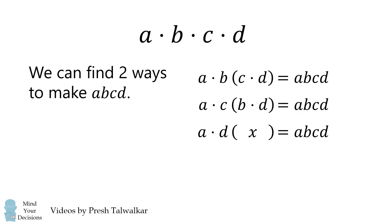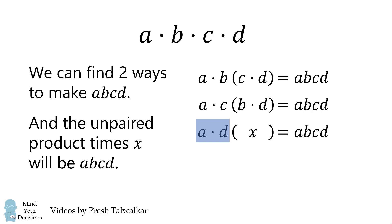And the other pair AD, which is not listed, will pair with the unknown product to get ABCD.